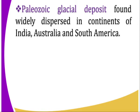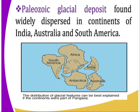The next point is the Paleozoic glacial deposits, found widely dispersed in the continents of India, Australia, and South America. If you look at these continents, all three of them came from Gondwanaland, which was in the Southern Hemisphere, and you are going to find the glacial deposits found across these continents. You can see where they are located — South America, Africa, India, and Australia. If you bring them together, they can join together.